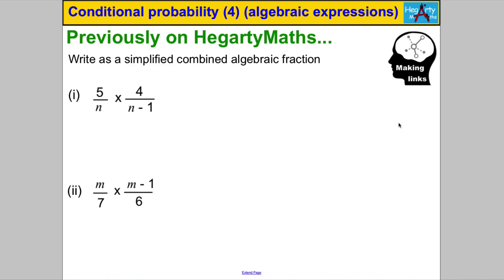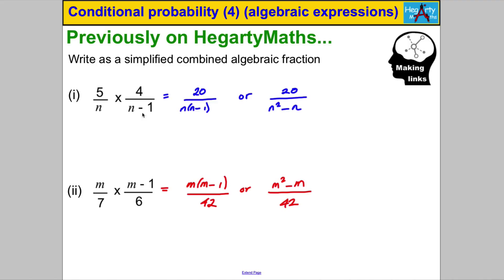This is just a case of multiplying fractions — numerator multiplied by numerator, denominator multiplied by denominator. You could have expanded the back bracket here or not; it didn't really matter. Similarly in part two, you could have expanded the bracket in the numerator or not — both would have been acceptable.